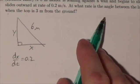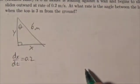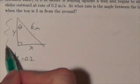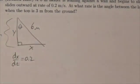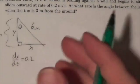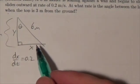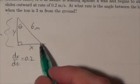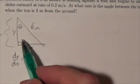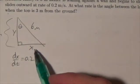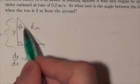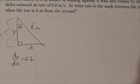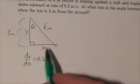And it says at what rate is the angle between the ladder and the wall changing when the top is 3 meters from the ground? Well, that's this angle right here. Okay, there's a lot going on here. What we want to do is come up with a way of handling this question. We want to relate this angle to this opposite side here because that's the information we're given.